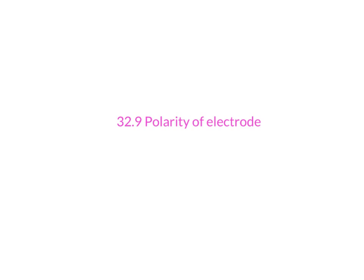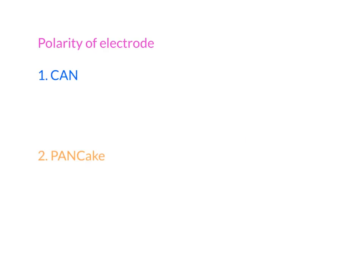In section 32.9, we're going to talk about polarity of the electrode. You have to remember that anode is not necessarily negative — it really depends on whether it is in a chemical cell or electrolytic cell. In this video, we're going to talk about both the electrolytic cell and the chemical cell, and what is the difference in polarity.